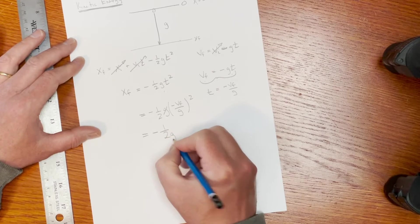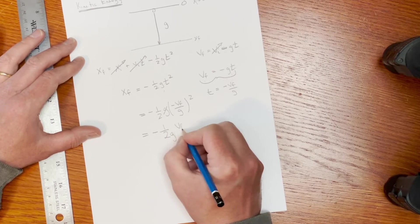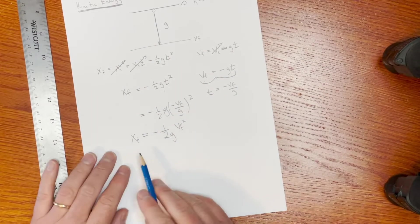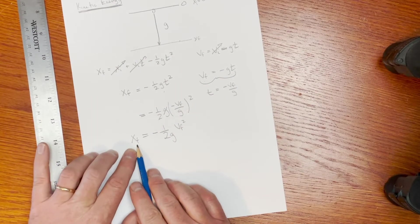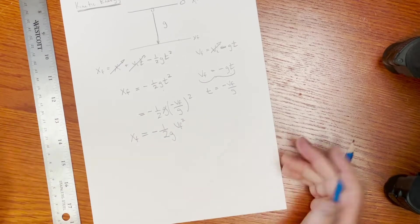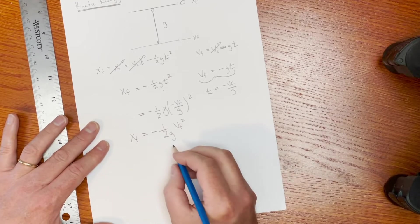So I get a g down here, and then I get a v_f squared up there. And that's what my final position is equal to. So we can tell that how far it falls is going to be proportional to how fast it's going at the end.